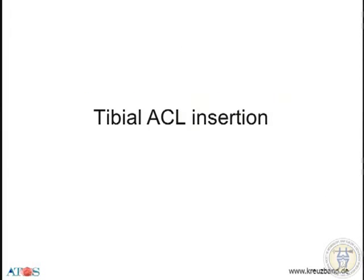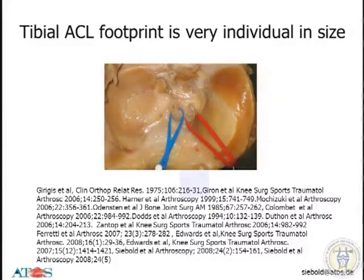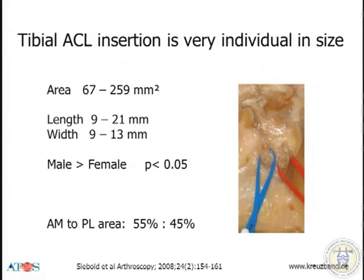I want to talk about the tibial insertion site. We know that it is very individual in size and shape, and we have plenty of publications. It's very difficult to clearly dissect these insertions, so we have different facets of this insertion. The area is very inhomogeneous — the length of the insertion site is between 9 and 21 mm, and the width is in a smaller range, 9 to 13. Males have bigger insertions than females, and this is significant. The area between AM and PL is about the same, a little bigger for the AM.